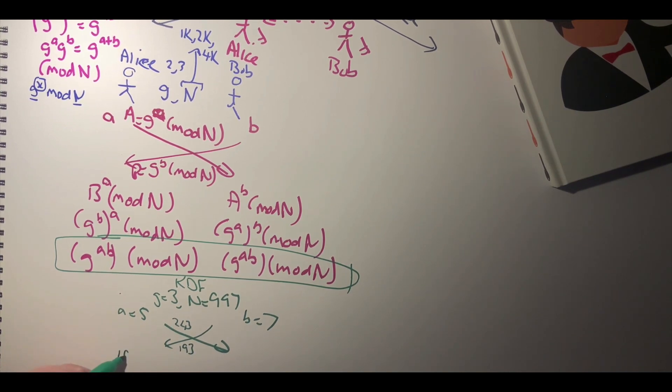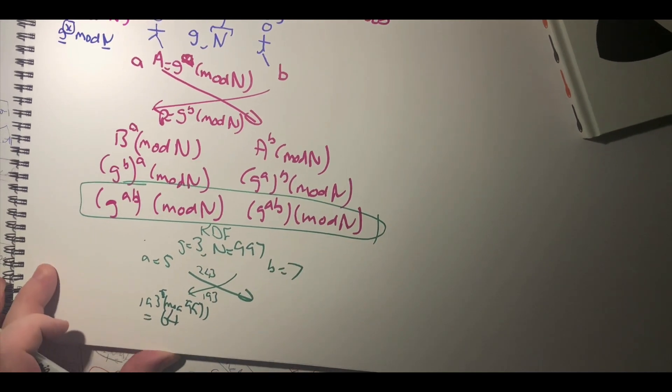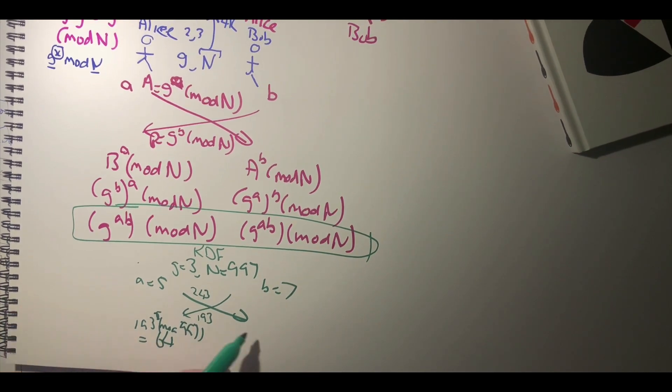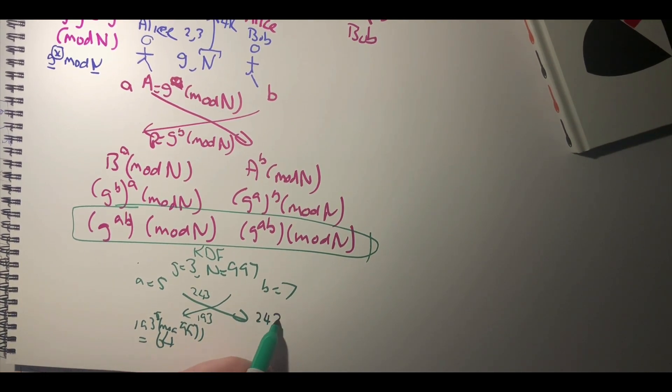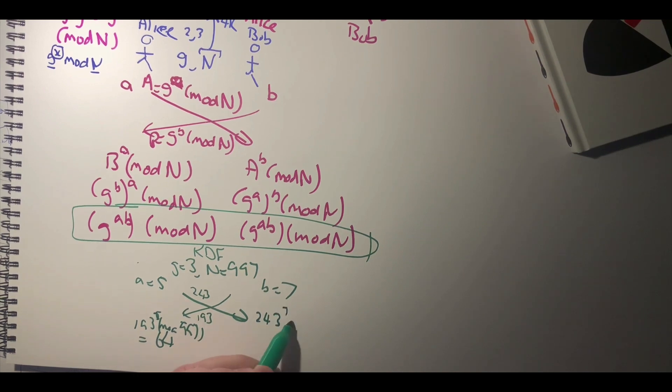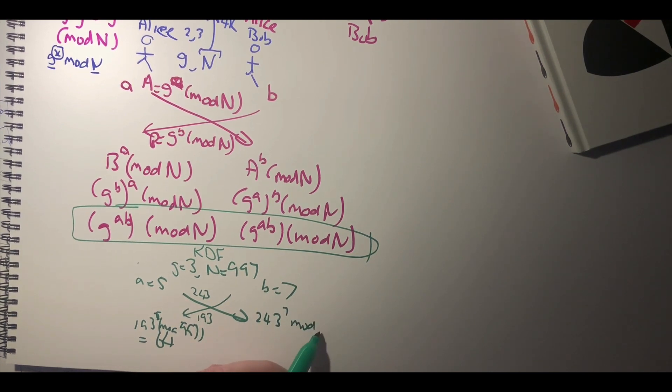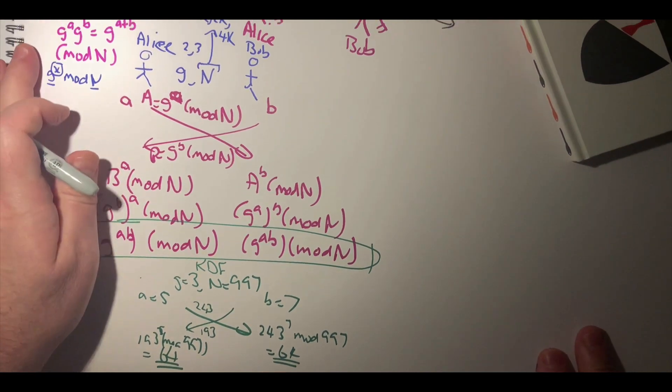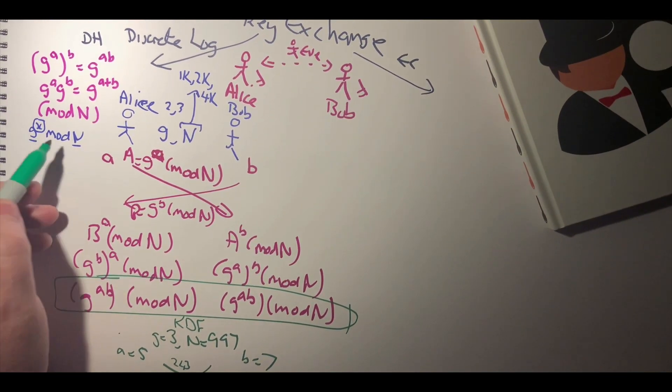193 to the power of 5 mod 997 comes out as 64, and 243 to the power of 7 mod 997 is 64. So they share the same value.